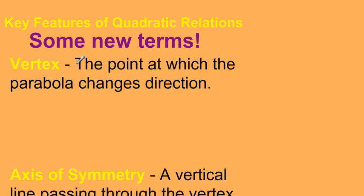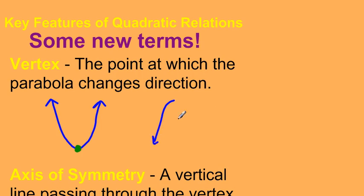Here are some new terms. The vertex is the point at which the parabola changes direction. If I have a parabola going down and then up, the vertex is that turning point. You can also call it the highest or lowest point on a parabola — the lowest point for one opening up, and the highest point for one opening down.